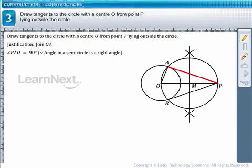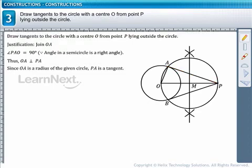So, we can say that PAO is perpendicular to the radius OA of the circle. By definition, PAO is therefore a tangent to the given circle. Similarly, PB is also a tangent to the given circle.